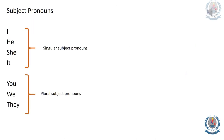These are the main subject pronouns. You can see that they are categorized based on their singularity or plurality. I, he, she, and it are all singular subject pronouns. You, we, and they are all plural subject pronouns.